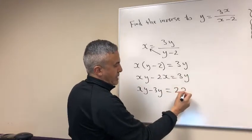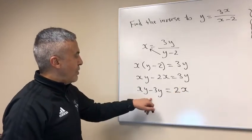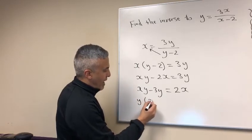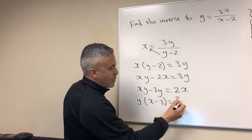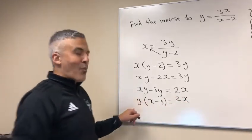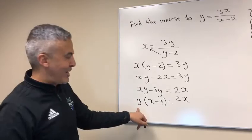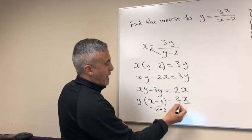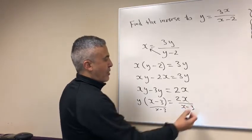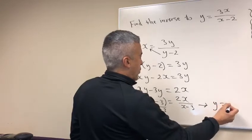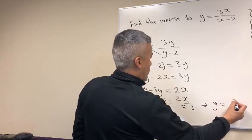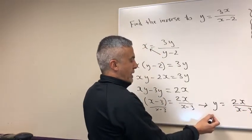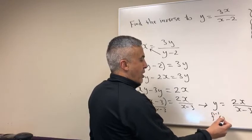So now I could take out y as the greatest common factor. And this way now we have y, just one y where we could solve for it. And all you need to do is just divide both sides by x minus 3. And therefore your final answer is y equals 2x over x minus 3. Usually you write the inverse as f to the negative 1 of x equals 2x over x minus 3.